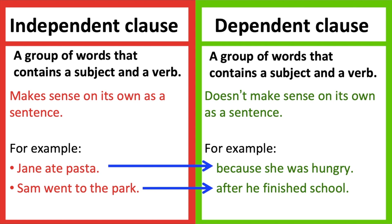We can also identify dependent clauses by looking for a subordinating conjunction. A subordinating conjunction introduces a dependent clause. There are many types of subordinating conjunctions, such as after, although, before, because, etc.